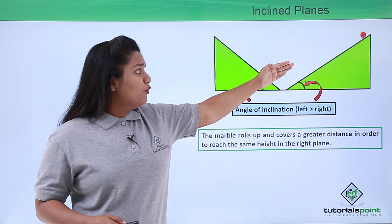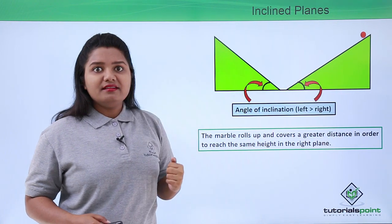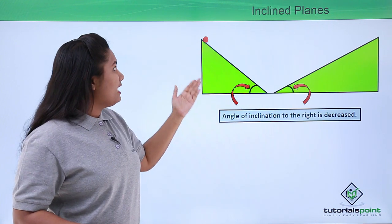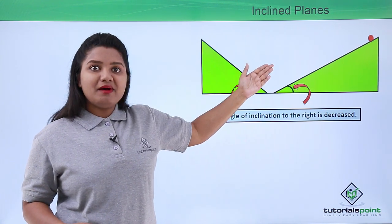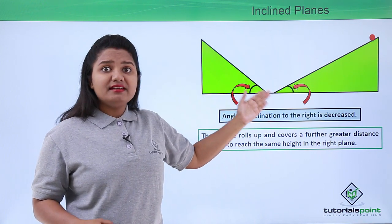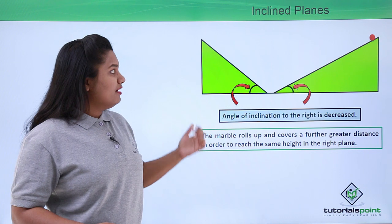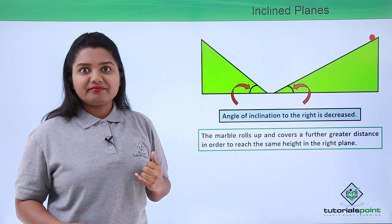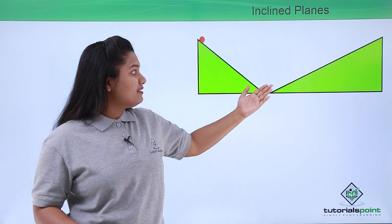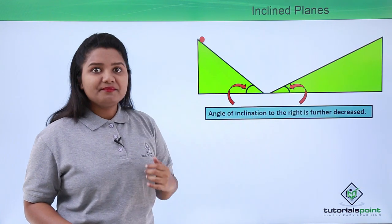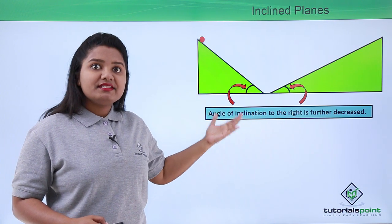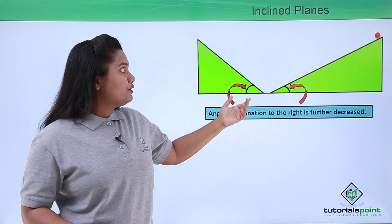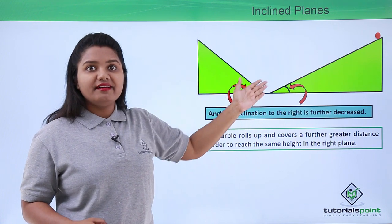We can decrease this angle even further. When we decrease it to a greater extent, the marble covers an even greater distance in order to reach the same height. As the angle decreases further, the marble covers more distance than it covered while rolling down.